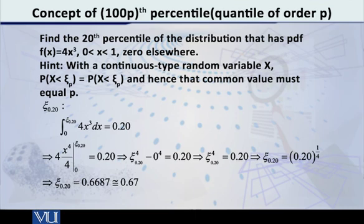As you can now see on the screen, the integral of 4x cube from 0 to xi 0.20 has to be equated to 0.20. And solving it very simply, because you know that x cube integral is x raised to 4 over 4, that will cancel out. So, it will be very easily solved.